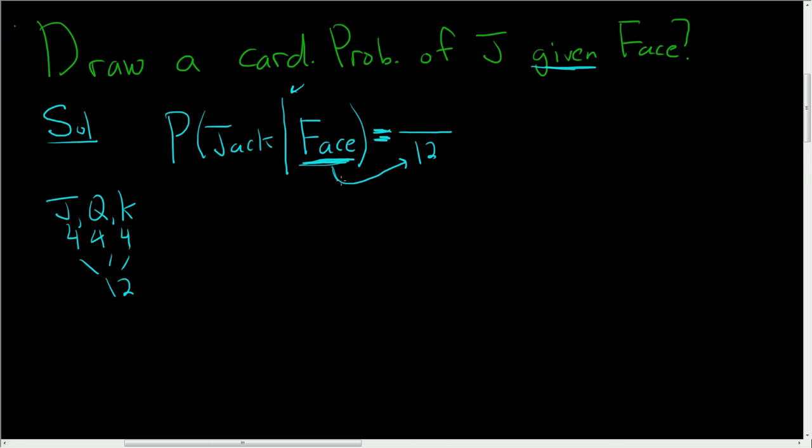Anyways, we know it's a face card, so that's how we get the 12. From those face cards, how many are jacks? Well, 4. So 4 over 12. So the answer ends up being 1 third.